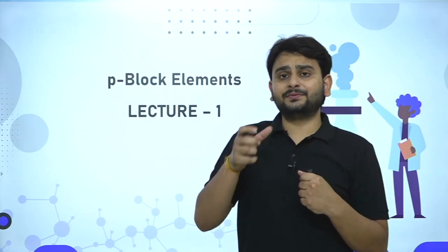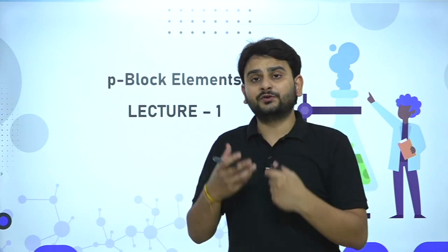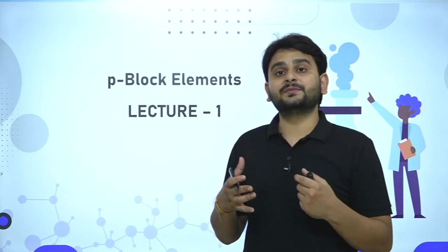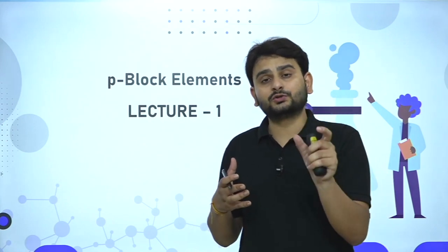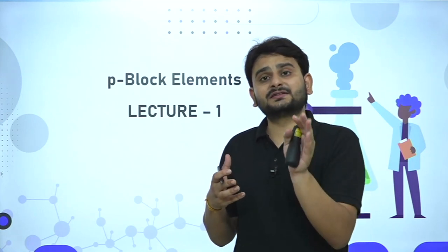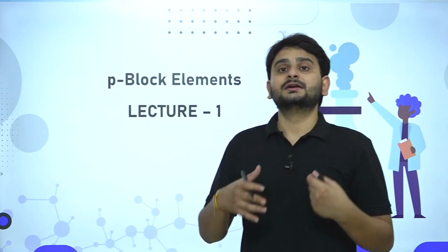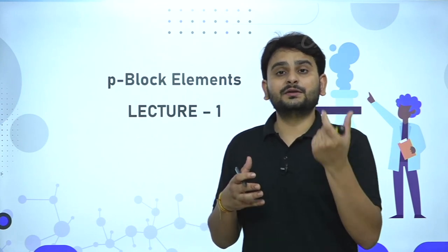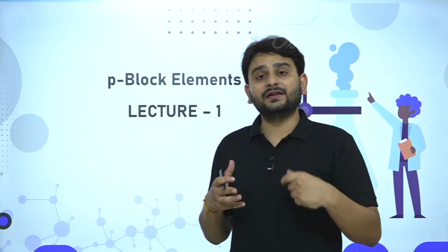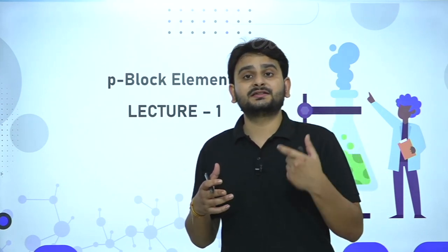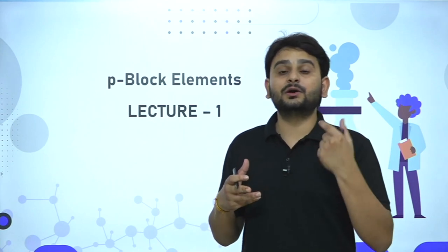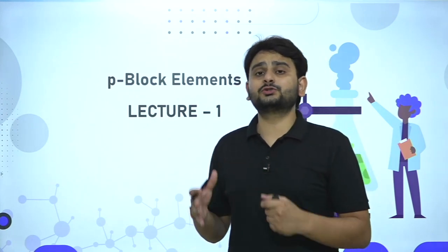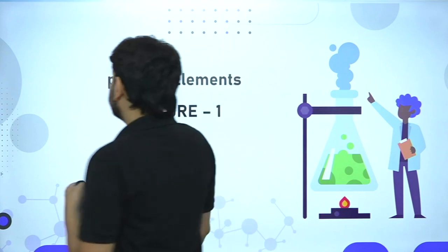We'll take this chapter group by group — starting with the boron family, which consists of boron, aluminium, gallium, indium, and thallium. We'll discuss the physical and chemical properties of each group, as well as important compounds. For example, when discussing boron, we'll cover diborane and borax. After group 13, we'll move on to groups 14, 15, 16, and so forth.